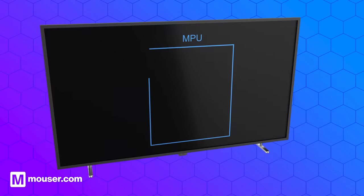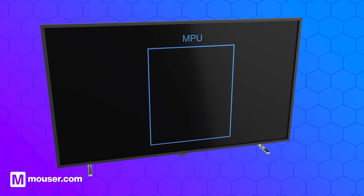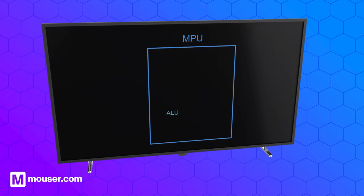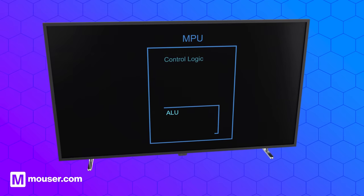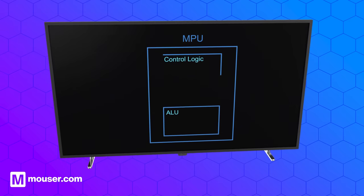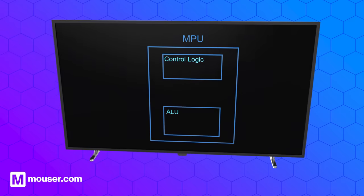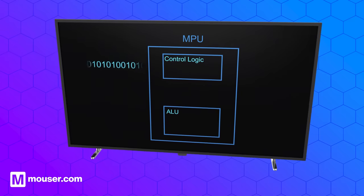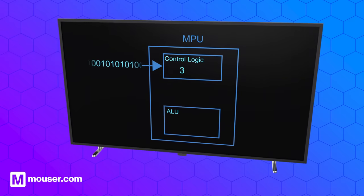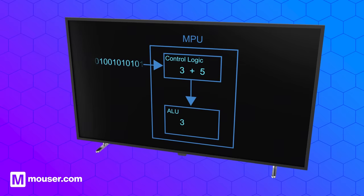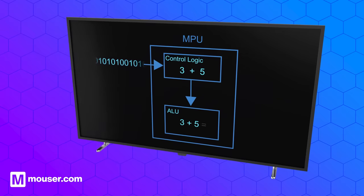An MPU typically consists of an arithmetic logic unit, ALU, and control logic. It carries out a task based on a set of instructions written as code. The control logic manages the instruction execution, and the ALU handles arithmetic operations.